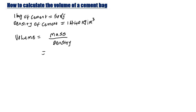In this case, because we want to calculate the volume of one bag of cement, it's going to be the mass of one bag of cement, which is equal to 50 kg, divided by the density of cement, which is 1440 kg per meter cube.